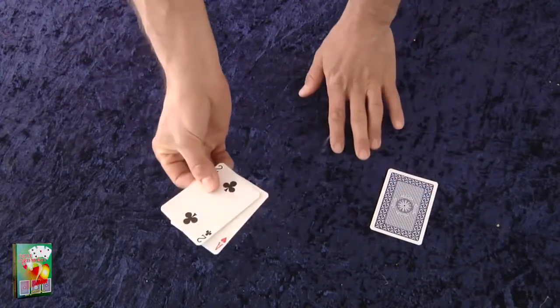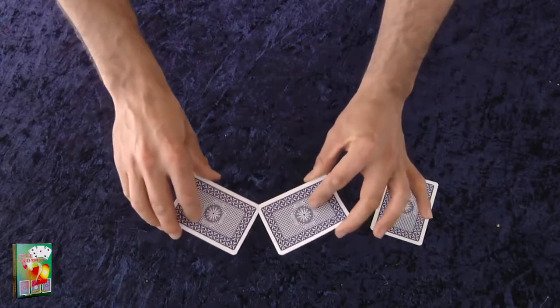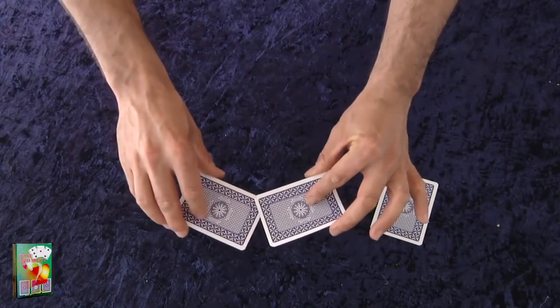That leaves me with just the red ace and a black card. Now, follow carefully. I'll shuffle the cards like this.